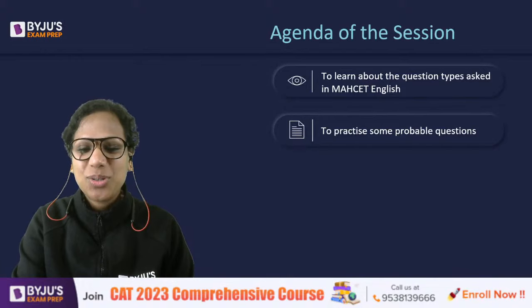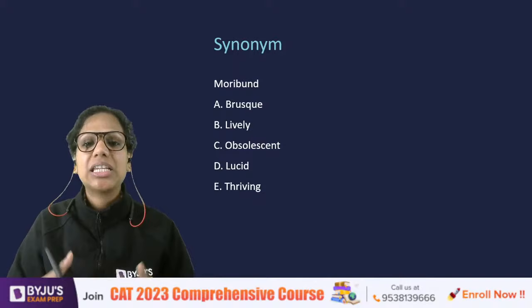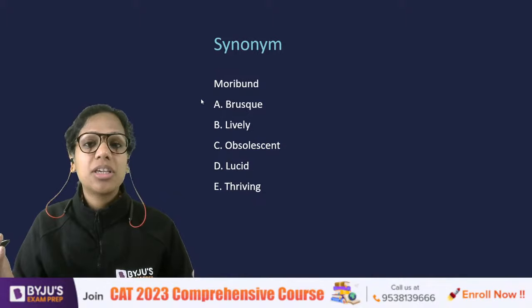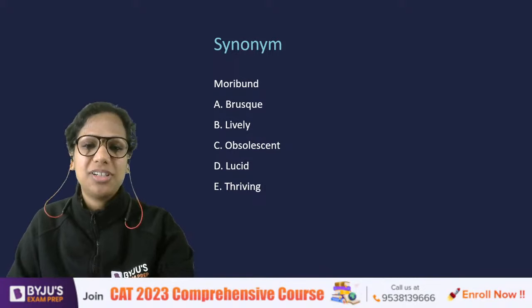Let's begin with the first question. There are five options because MHCT gives you five options. Remember there's no negative marking in the exam. Tell me the synonym of the word 'moribund'.